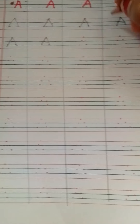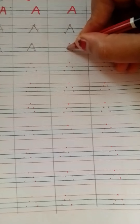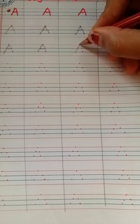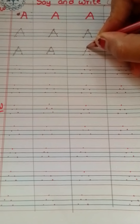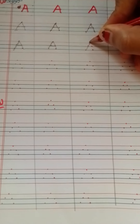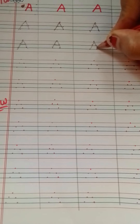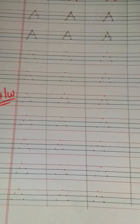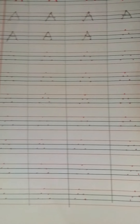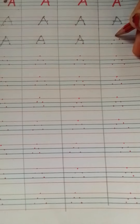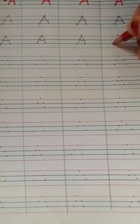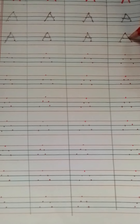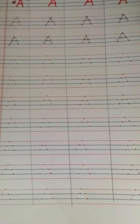Top line to second middle line — left slanting line. Top line to second middle line — one more slanting line, sleeping line. A. Left slanting line, right slanting line, sleeping line. A.